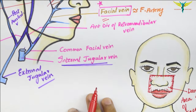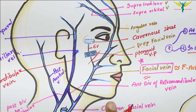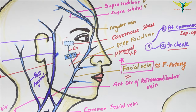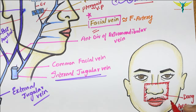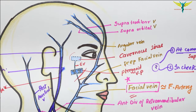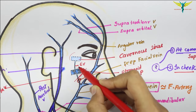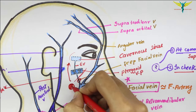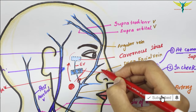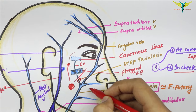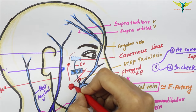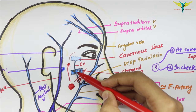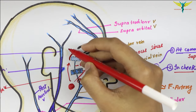The facial vein and its communications are devoid of valves in their lumens. Since the facial vein rests on the muscles of mastication, septic emboli from the dangerous area of the face can spread in a retrograde direction through the deep facial vein into the pterygoid venous plexus, then through the emissary vein into the cavernous sinus.